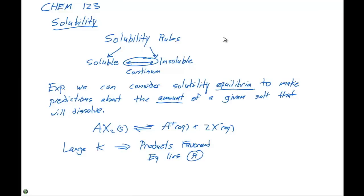So if we have a small K, that means that reactants are going to be favored. If the reactants are favored, the equilibrium is gonna lie to the left.